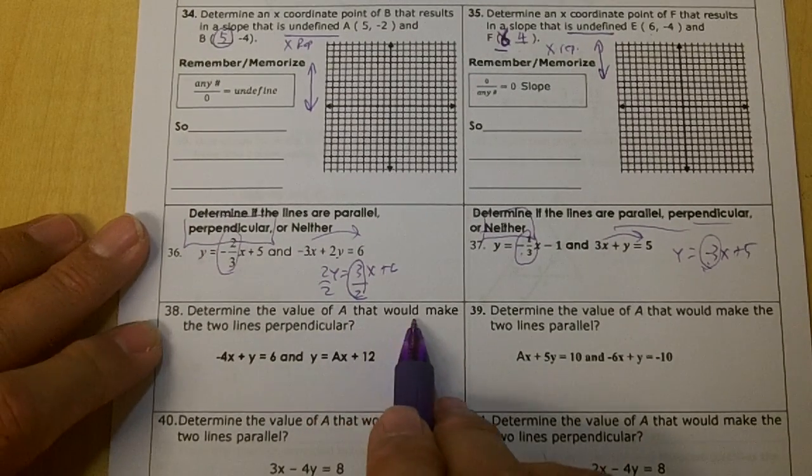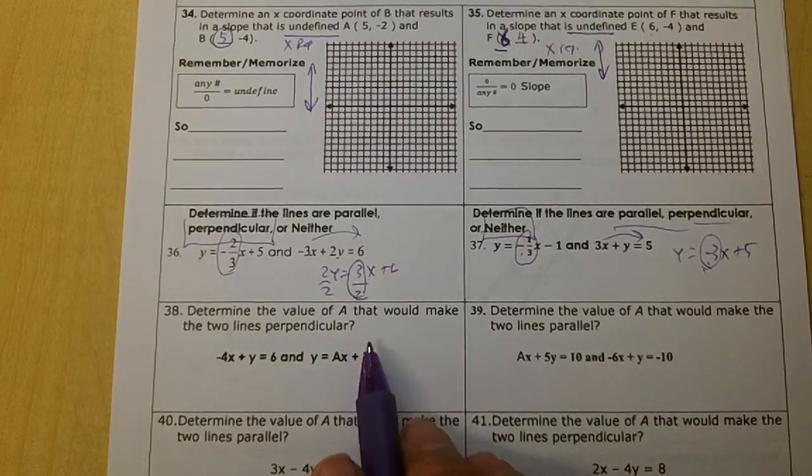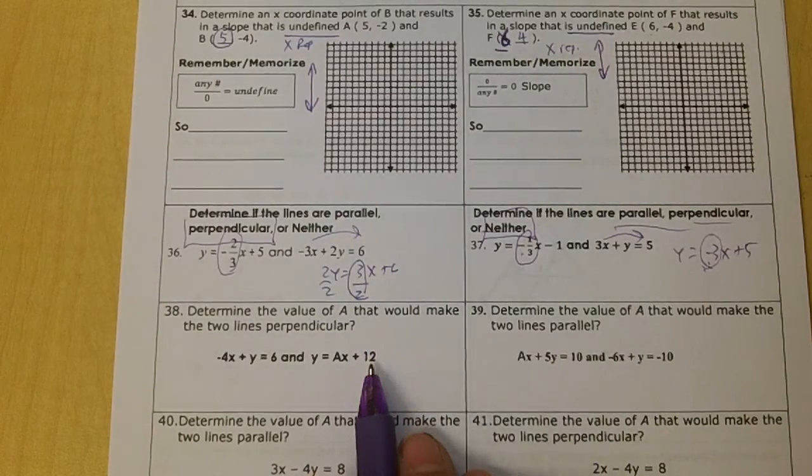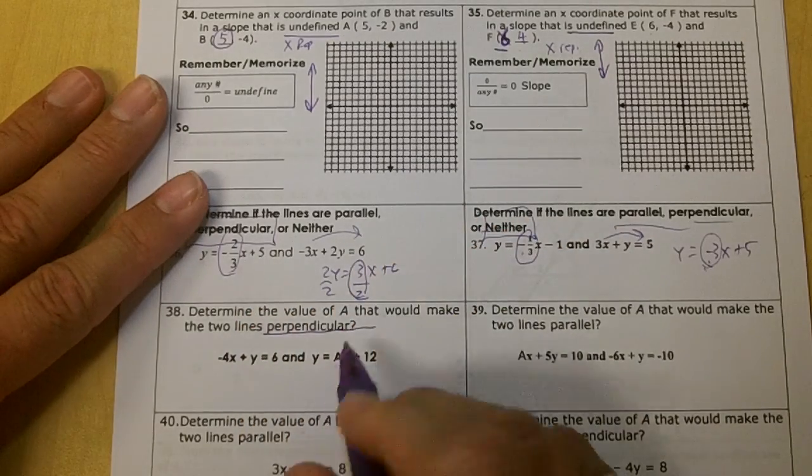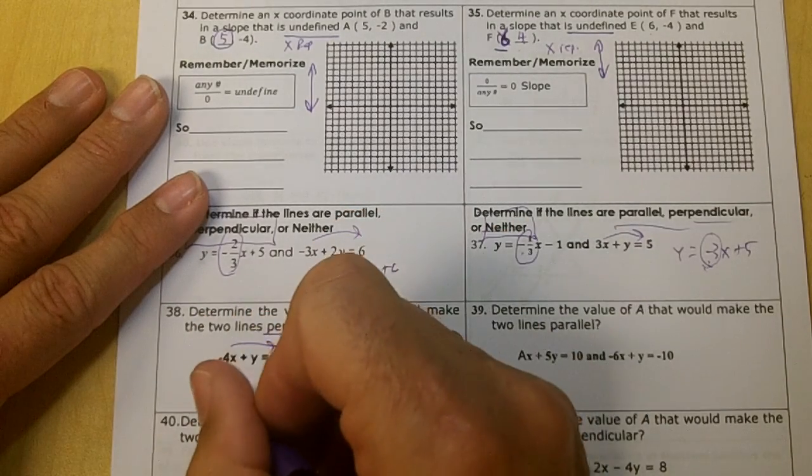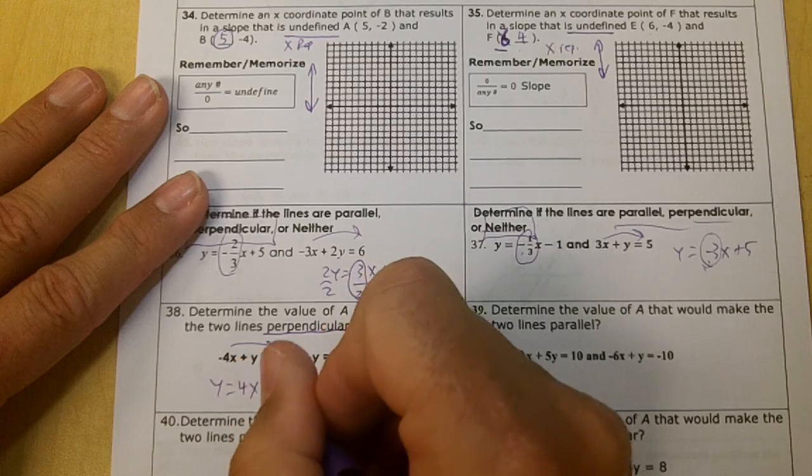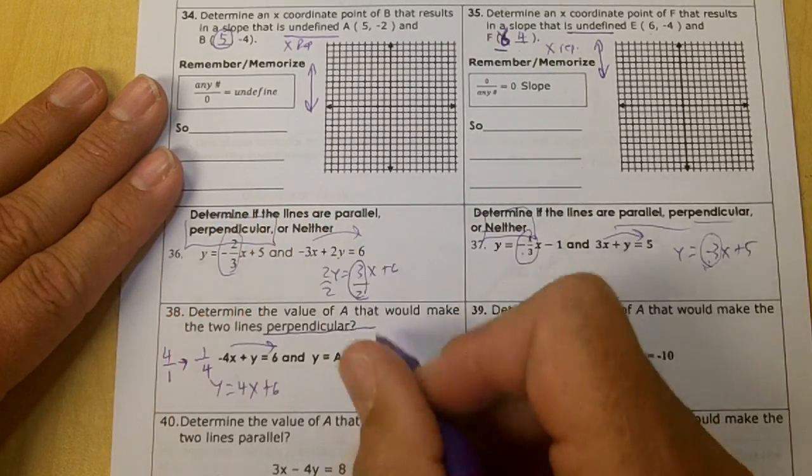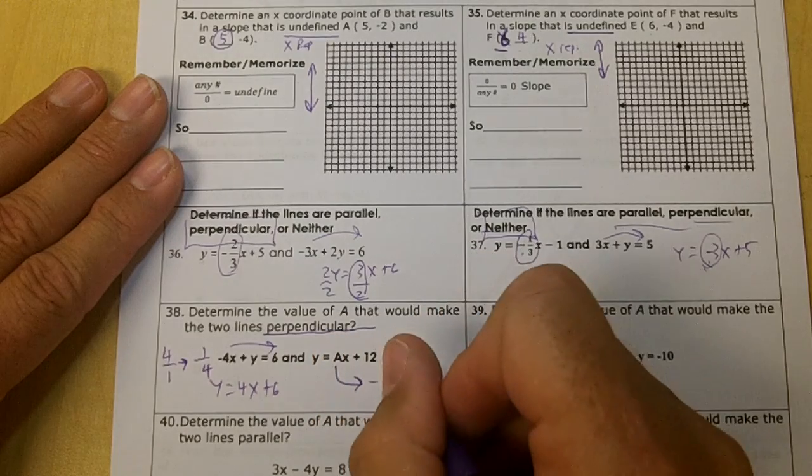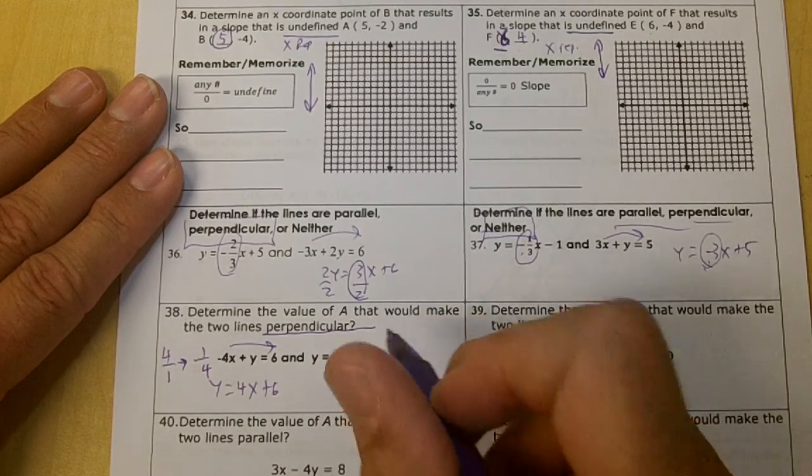Number 38, determine a value of A that would make the two lines perpendicular. We want this slope right here. So move the x over. You get y equals 4x plus 6. 4 over 1 is my slope. The opposite reciprocal would be negative one-fourth. So A would be needing to be a negative 1 over 4.